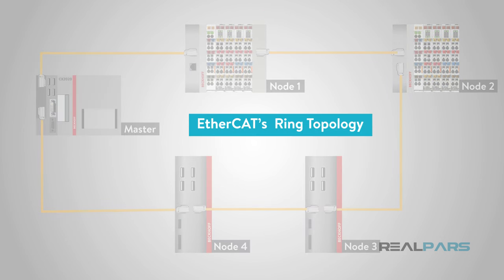With EtherCAT's intrinsic ring topology, discussed later, this ensures increasingly accurate data with every data transmission because of the distributed clock mechanism. This is one of the advantages of EtherCAT.